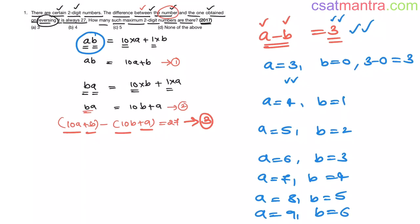So how many such maximum 2-digit numbers are there? 1, 2, 3, 4, 5, 6, 7. So there are 7 numbers possible my friends. 7 is not there in our options. So our answer is D, none of the above.